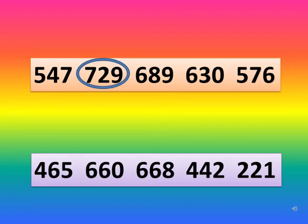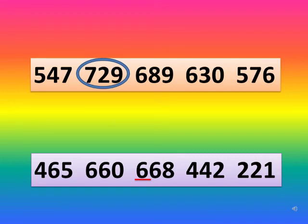Compare the hundreds place digit in all the numbers. In 465 it is 4, in 660 it is 6, in 668 it is 6, in 442 it is 4, and in 221 it is 2. So 6 is the greatest among all five numbers.